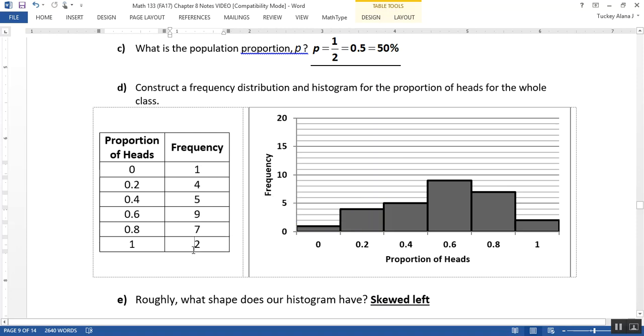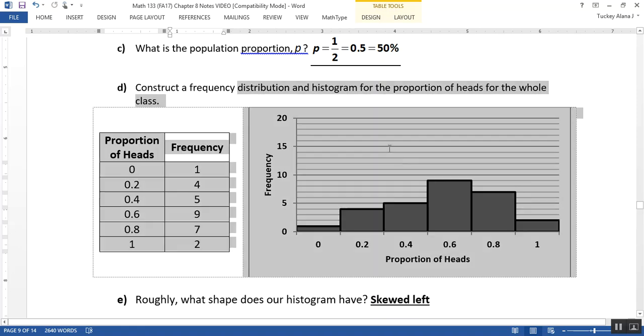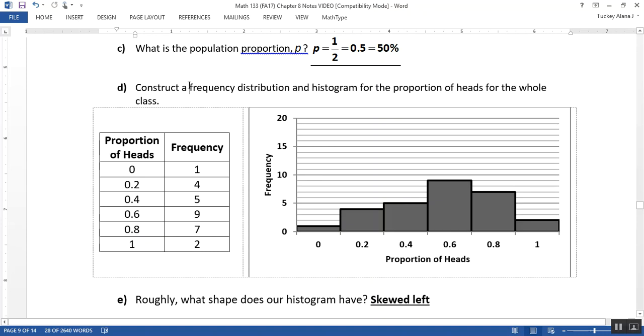And we can see that when I did that, this distribution was skewed left right here. You can see there's a bit of a tail going out to the left. The peak is kind of at 0.6.